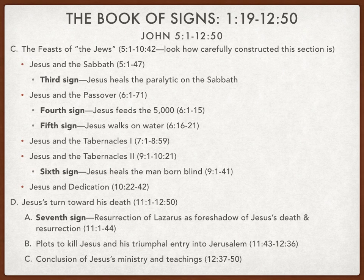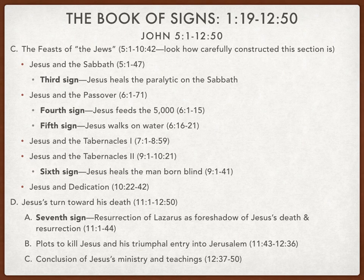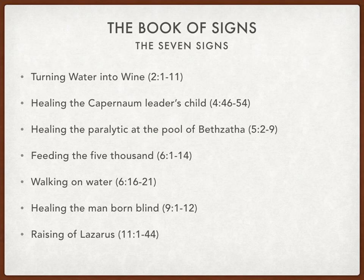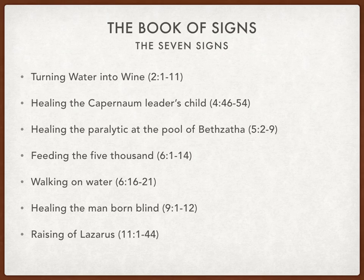The whole Book of Signs shows through these seven signs how divine Jesus is — in all the episodes, dialogues, and extended speeches with Nicodemus, the Samaritan woman, the man born blind, and religious leaders, all of it points to his divinity. The seven signs are: turning water into wine, healing the Capernaum leader's child (probably the Roman official), healing the paralytic, feeding 5,000, walking on water, healing a man born blind, and raising Lazarus. You can see how those are progressive.